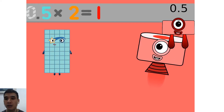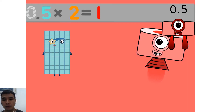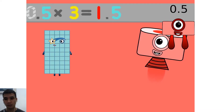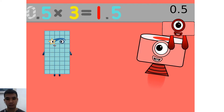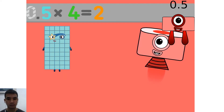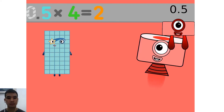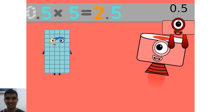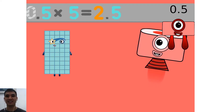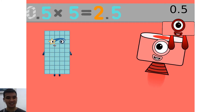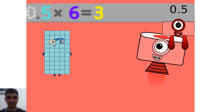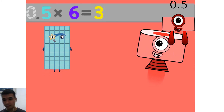0.5 times 2 equals 1. 0.5 times 3 equals 1.5. 0.5 times 4 equals 2. 0.5 times 5 equals 2.5. 0.5 times 6 equals 3.